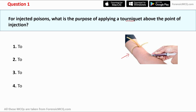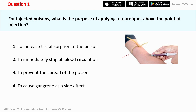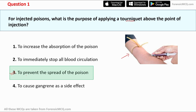The options are: first, to increase the absorption of the poison; second, to immediately stop all blood circulation; third, to prevent the spread of the poison; and fourth, to cause gangrene as a side effect. The main use of a tourniquet is to prevent the spread of poison — that is option three. So the correct answer is option three: to prevent the spread of the poison.